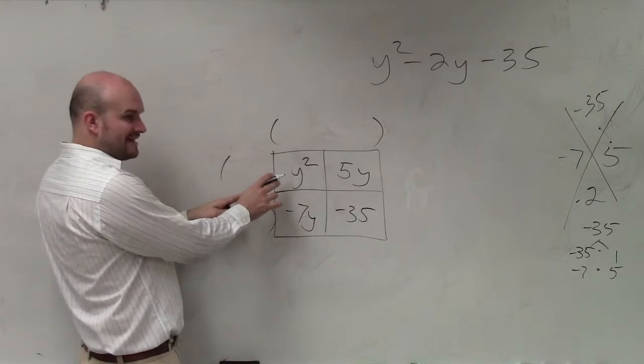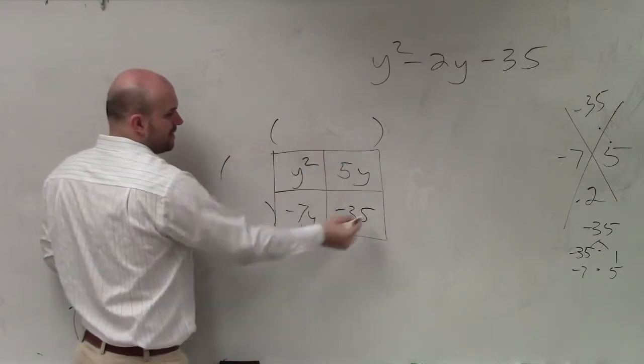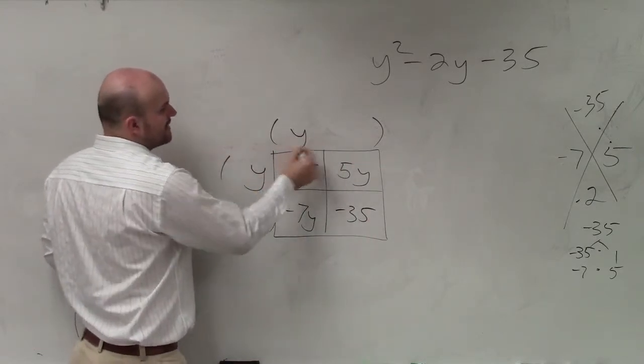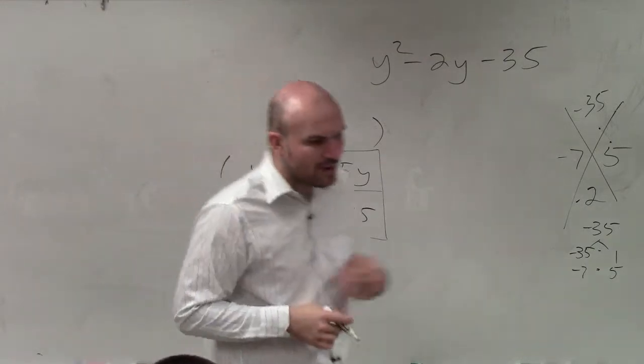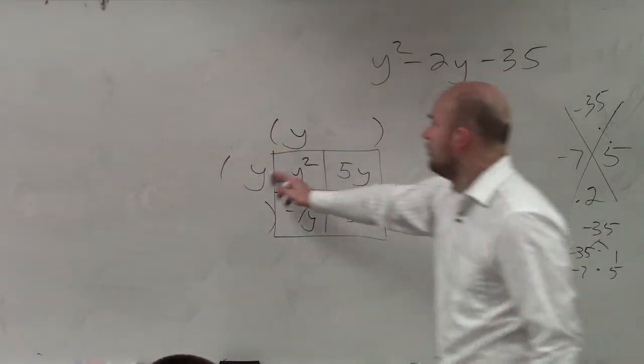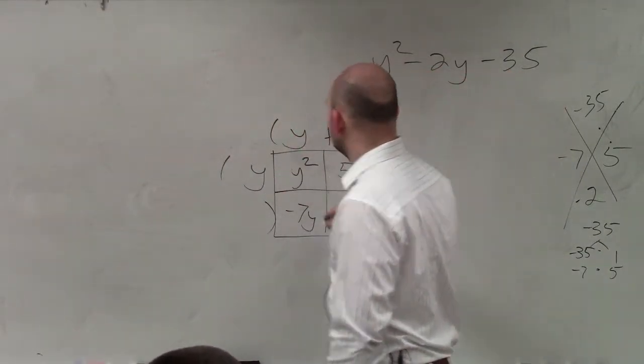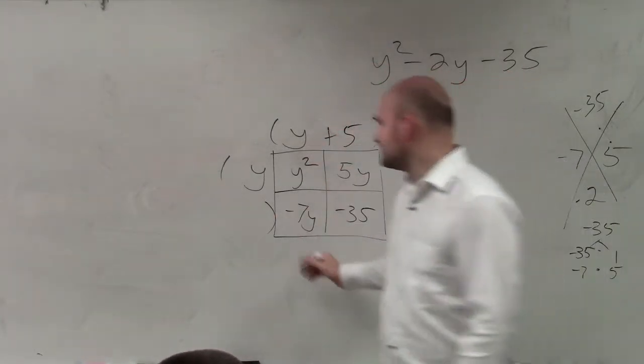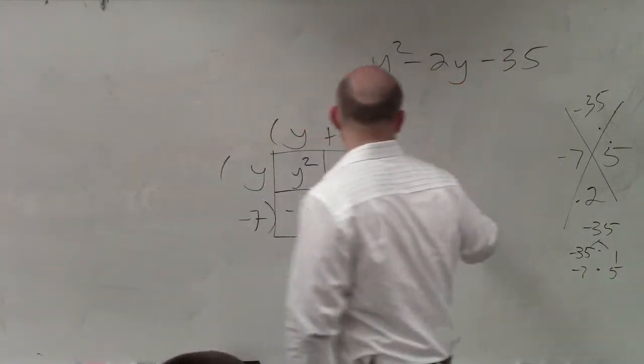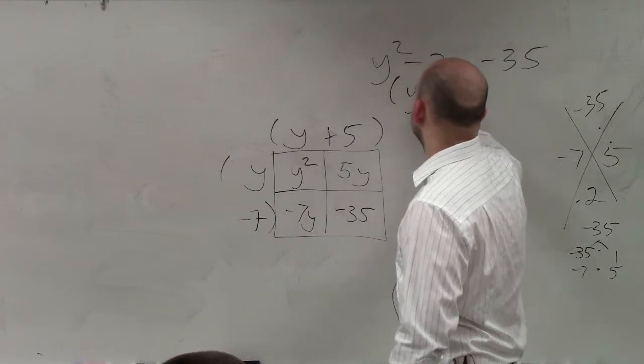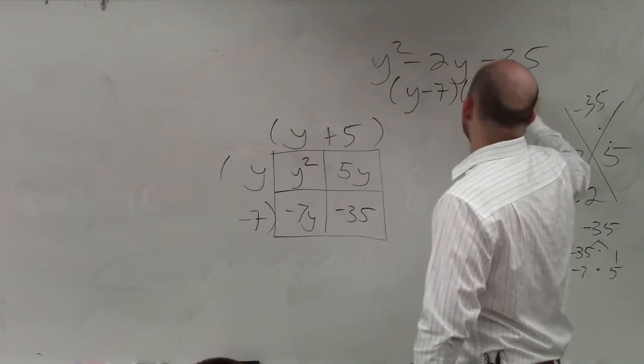Therefore, now to find the area, to find what I'm multiplying by, obviously to get to y squared, it's going to be y times y. y times what is positive 5? And y times what gives you negative 7y? That's a negative 7. So therefore, my two factors are y minus 7 times y plus 5.